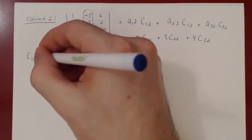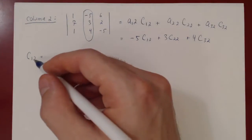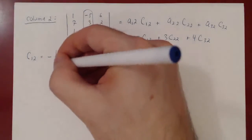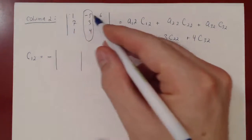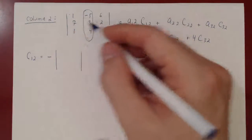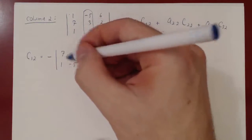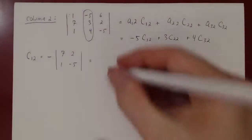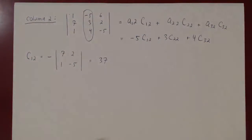C12: negative 1 to the power 1 plus 2 is -1. Deleting row 1 and column 2 gives (7, 2; 1, -5). The determinant is -35 minus 2, which is -37. Times -1 gives positive 37, just as before.